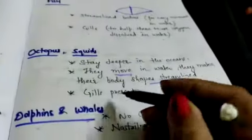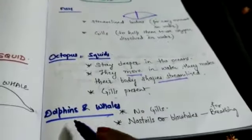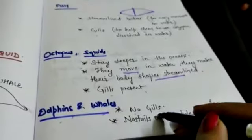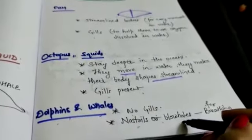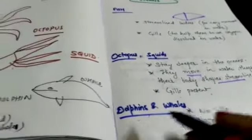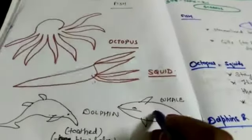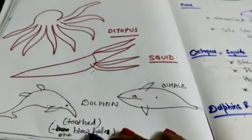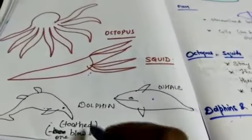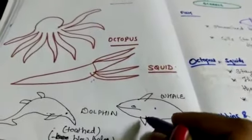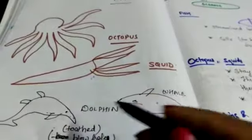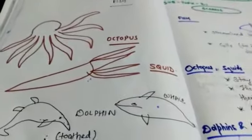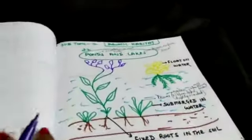About dolphins and whales. No gills are present. Their nostrils or blowholes are present for breathing. Here whale, one blowhole is present, and here dolphin, two blowholes are present.